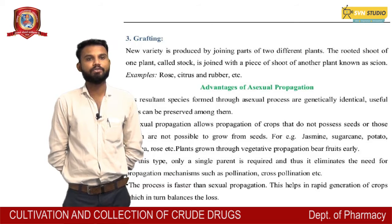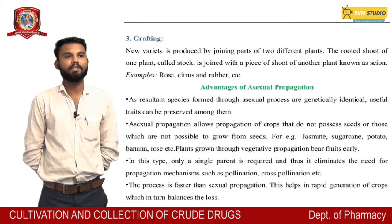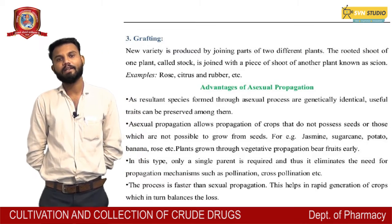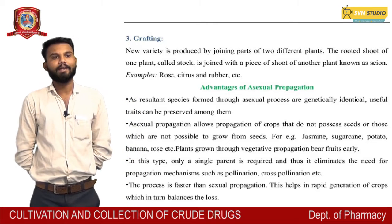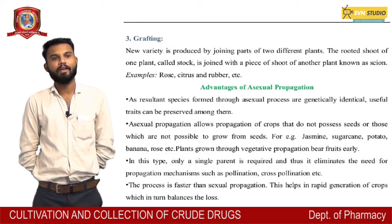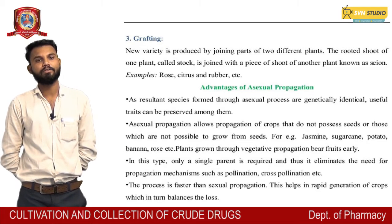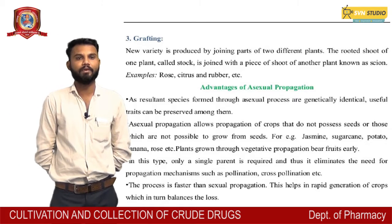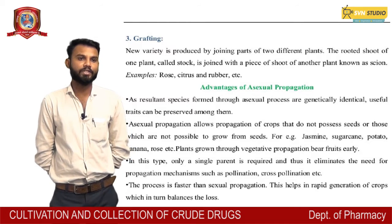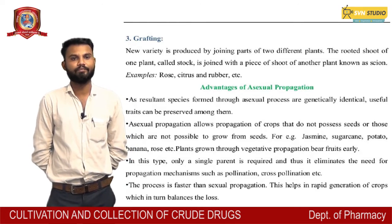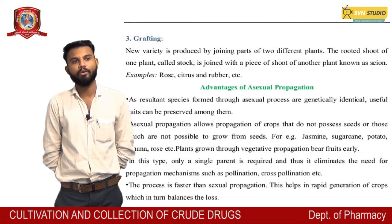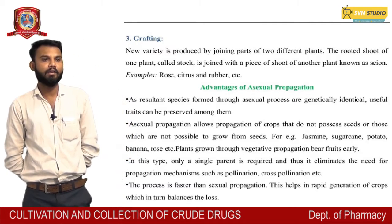Advantages of asexual propagation: The resultant species formed through asexual processes are genetically identical. Useful traits can be preserved. Asexual propagation allows propagation of crops that do not possess seeds or those which are not possible to grow from seeds, e.g., jasmine, sugarcane, potato, banana, and rose.